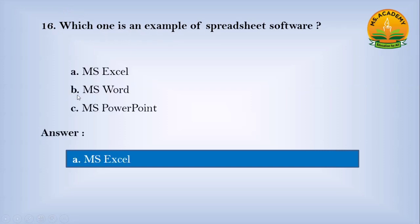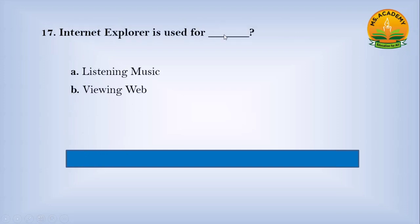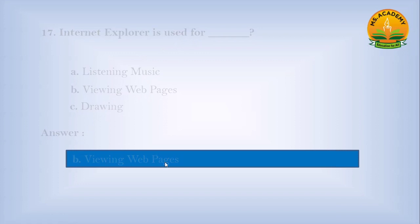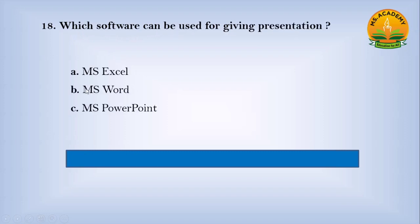Which one is an example of spreadsheet software? Option A: MS Excel, option B: MS Word, option C: MS PowerPoint. Answer: A — MS Excel. Internet Explorer is used for — option A: listening to music, option B: viewing web pages, option C: drawing. Answer: B — viewing web pages.